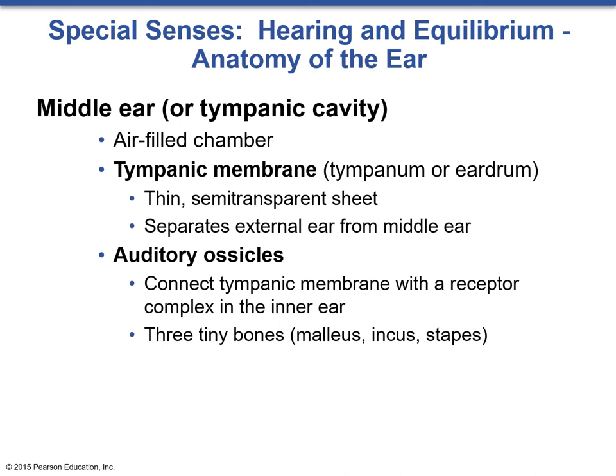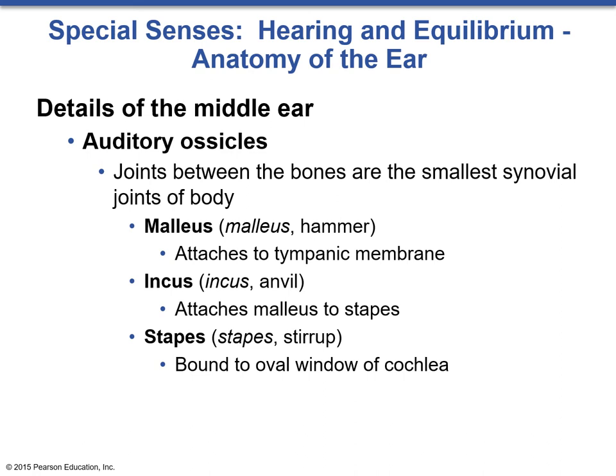Vibration is transmitted via auditory ossicles — three tiny bones, the smallest bones in the body, that connect the tympanic membrane all the way to the cochlea. They go in order: malleus, incus, and stapes. The auditory ossicles have the smallest synovial joints in the body. Malleus, also known as the hammer, attaches to the tympanic membrane. The incus is the anvil, connecting the malleus to the next bone, the stapes or stirrup, which is bound to the oval window of the cochlea.